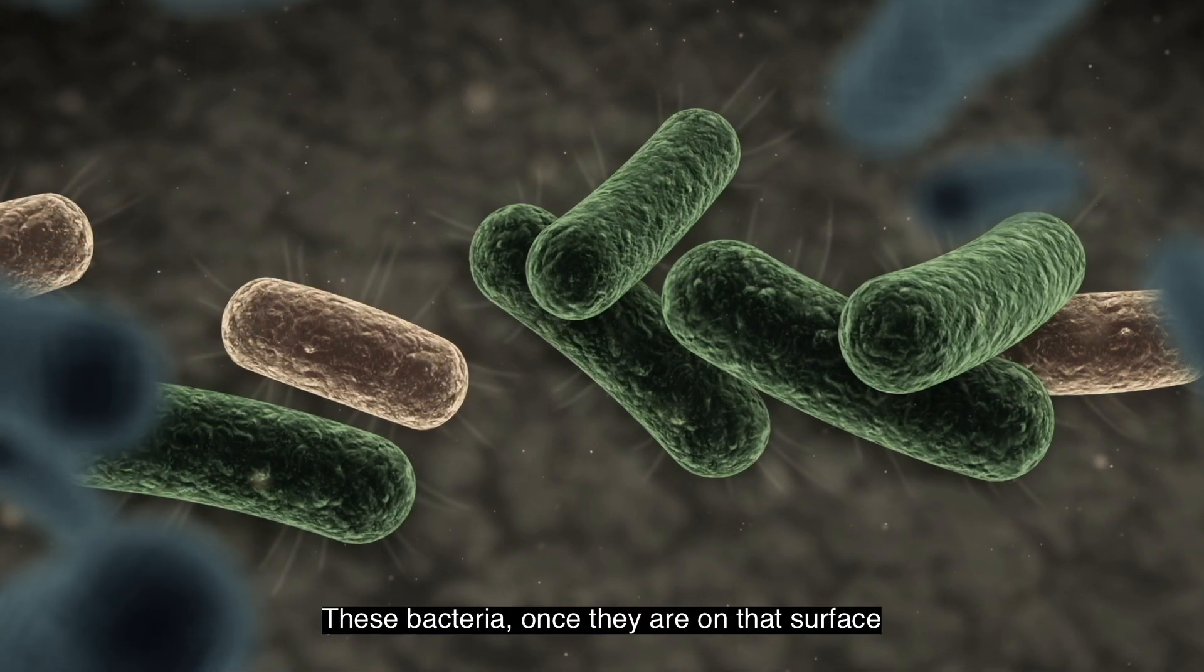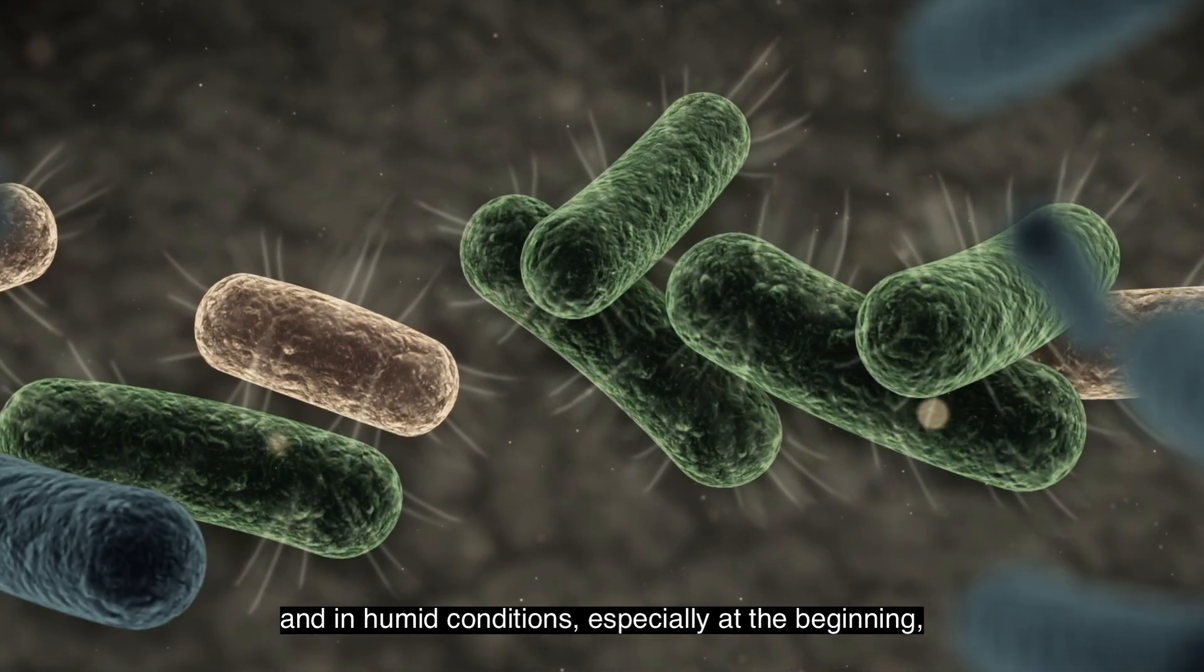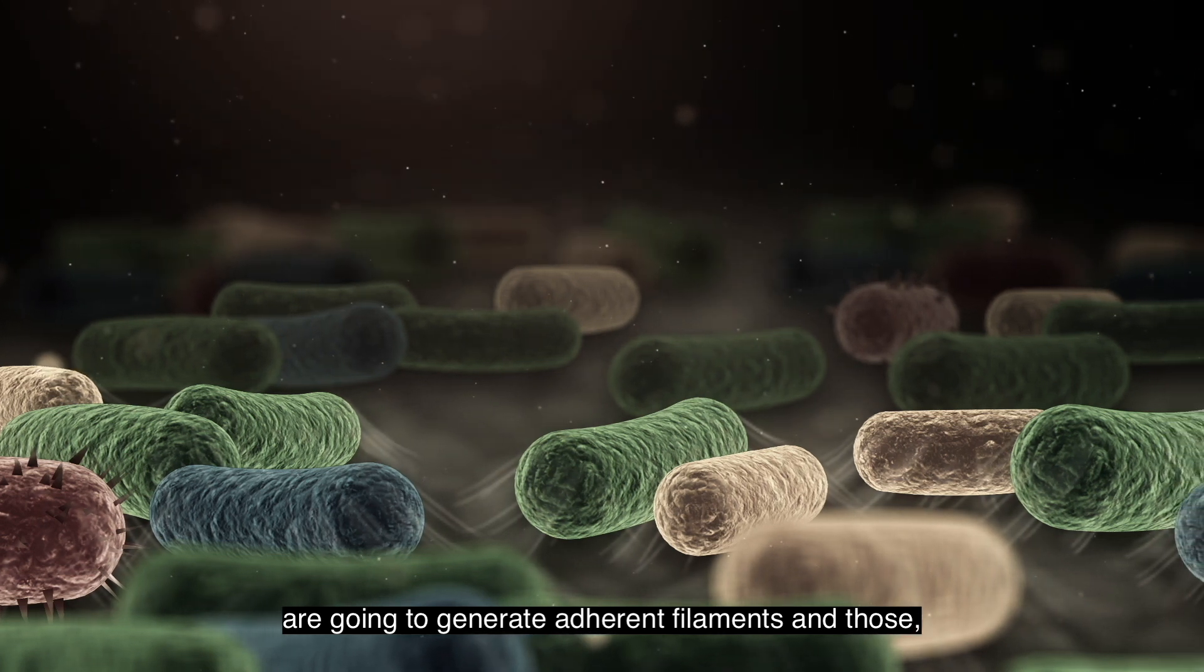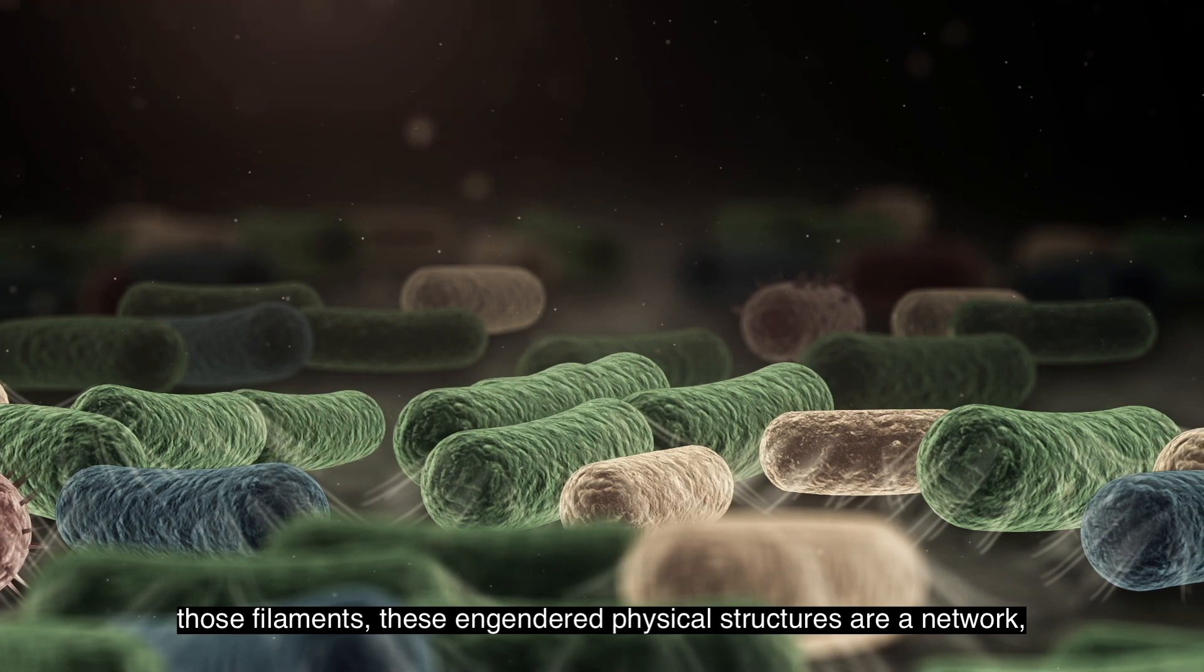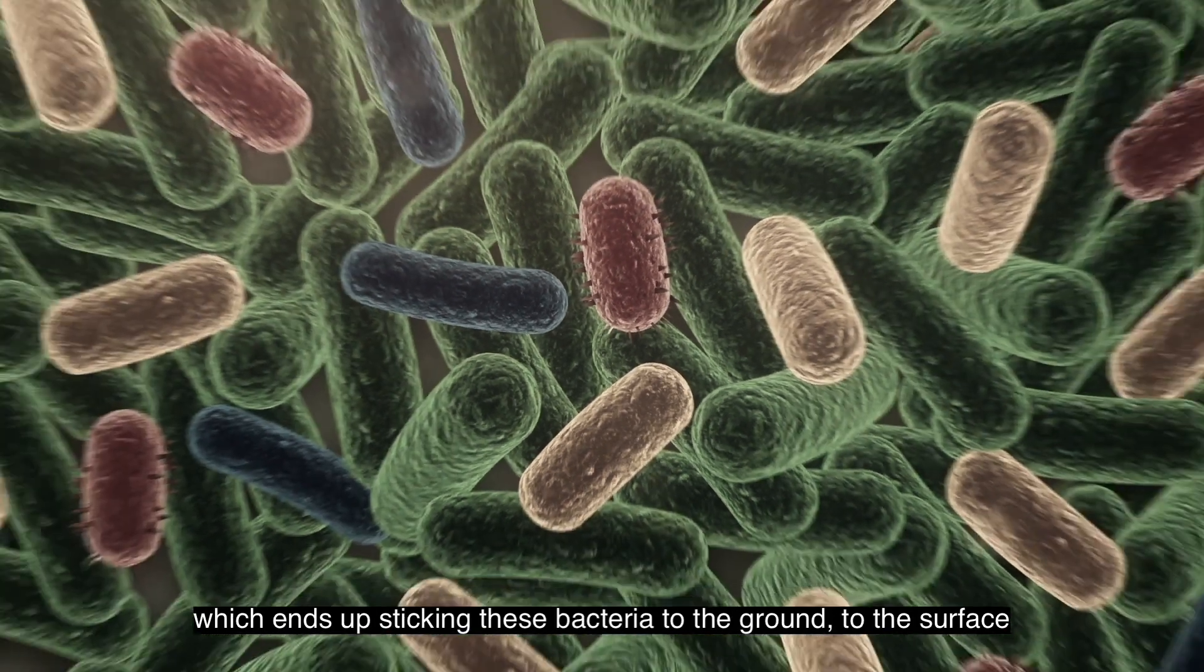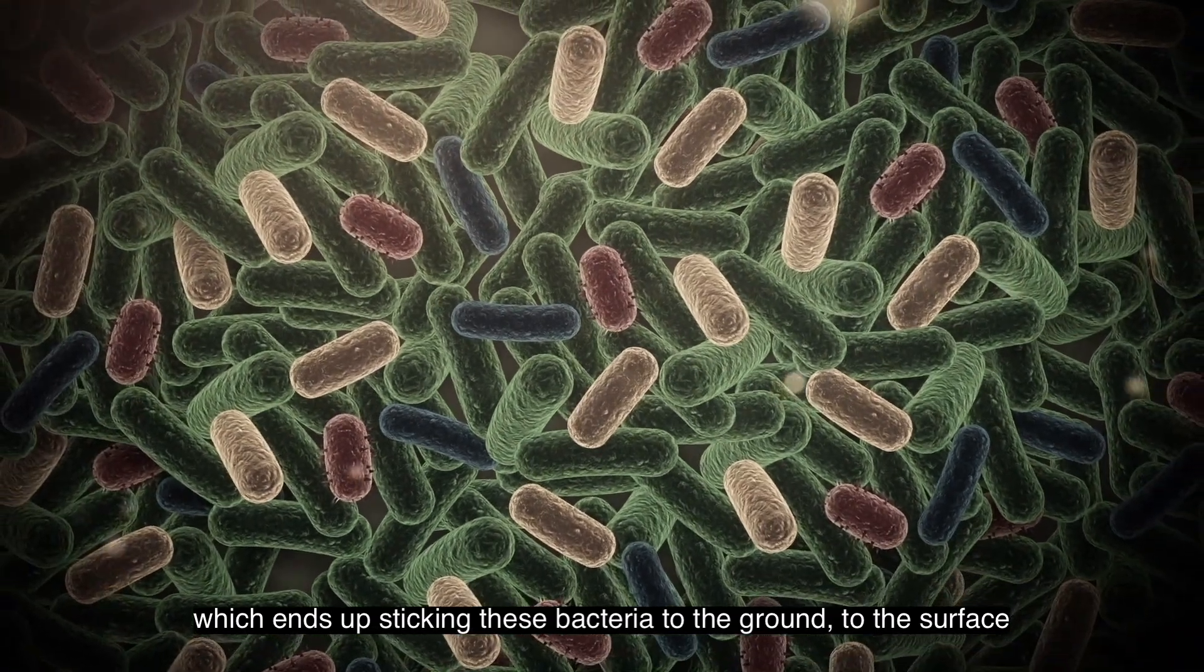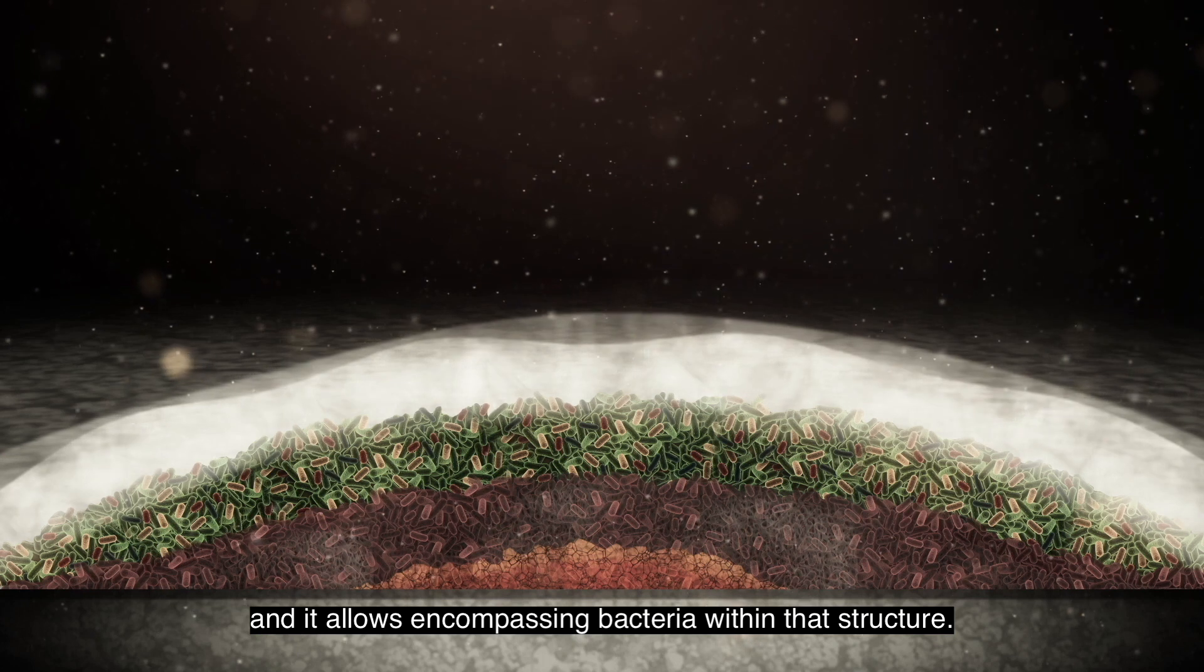These bacteria, once they are on the surface, and in conditions of humidity, especially at the beginning, will generate some adherent filaments. And those filaments, that physical structure, generates a network that ends up pegging these bacteria to the surface and allows them to engulf the bacteria within that structure.